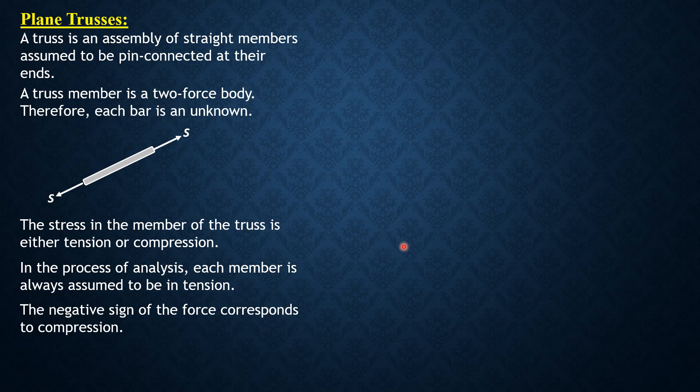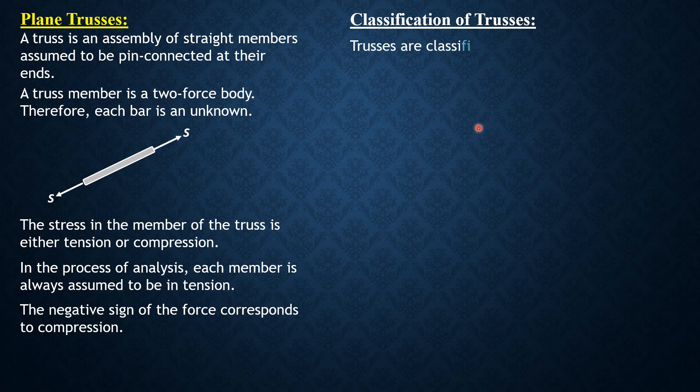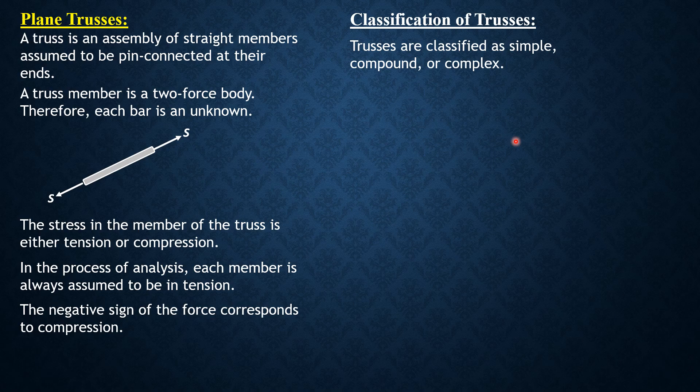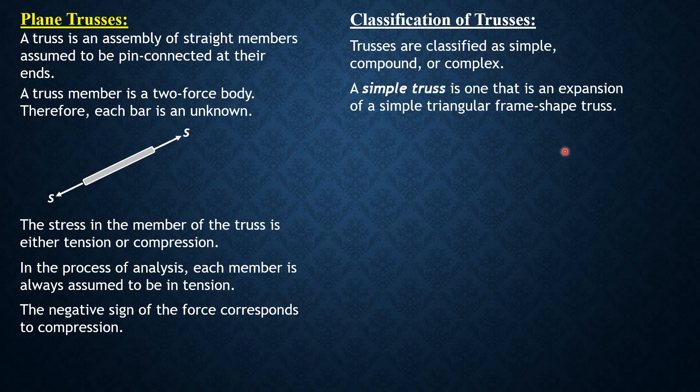Classification of trusses: trusses are classified as simple, compound, or complex. Simple trusses are those that start with a simple frame-like shape or frame truss. If you extend this truss, all you have to do is add two members and introduce another joint.